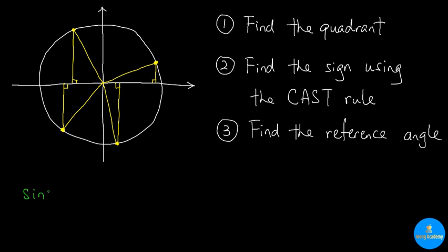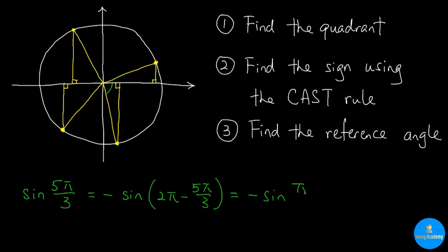For sine of 5π over 3, the angle 5π over 3 lies in the fourth quadrant because it is greater than 3π over 2 but less than 2π. By the CAST rule, sine is negative in the fourth quadrant. So sine of 5π over 3 equals negative sine of the reference angle. Because 5π over 3 is in the fourth quadrant, the reference angle is 2π minus 5π over 3, which simplifies to π over 3. Since sine of π over 3 is √3 over 2, the final answer is negative √3 over 2.